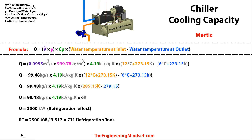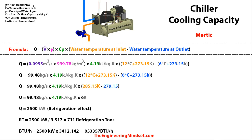If you want to convert to refrigeration tons, divide your kilowatts by 3.517 to give you 711 refrigeration tons. And if you want to convert kilowatts into British thermal units per hour, multiply the kilowatts by 3,412.142 to get your BTUs per hour.